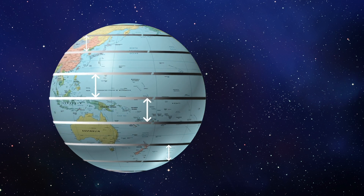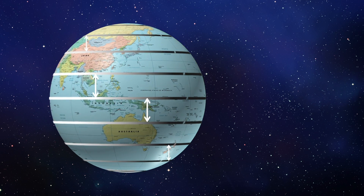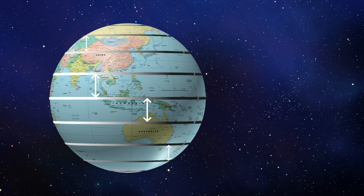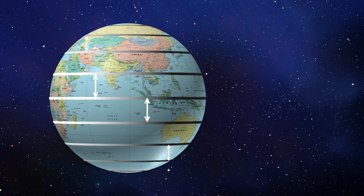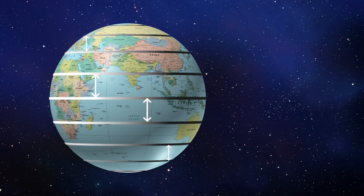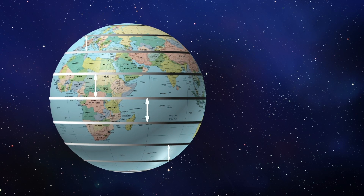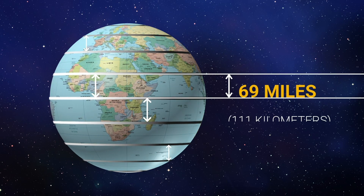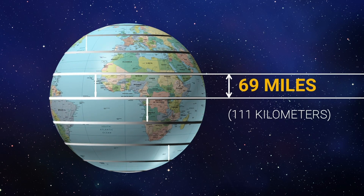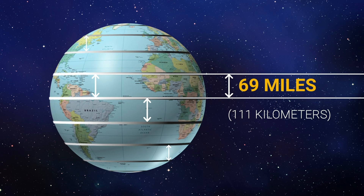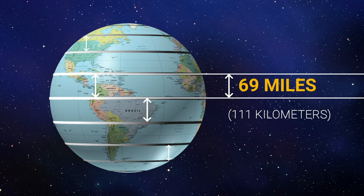However, as the earth is geoid and not spherical in shape, the distance varies slightly as we move northwards or southwards from the equator. Each degree of latitude is approximately 69 miles.